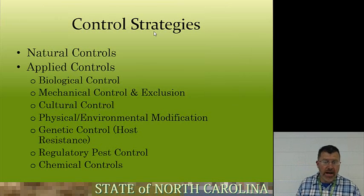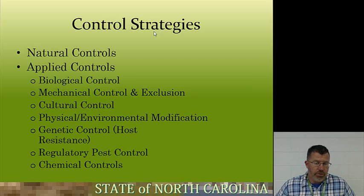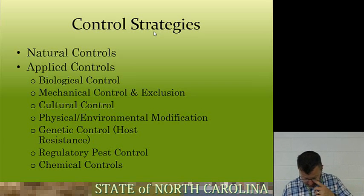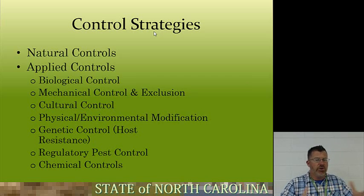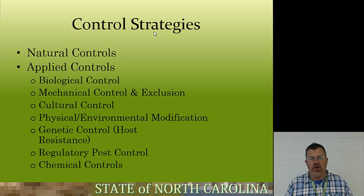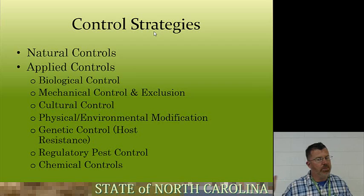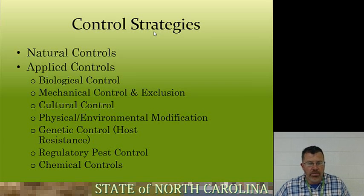Control strategies. Natural controls — we've watched the lecture on natural pest controls, so you're familiar with that. Applied controls are methods used by humans. We can introduce biological control using natural enemies and predators — we're introducing them, not letting nature take its course. That would be your natural pest control, but here we're introducing predators into a greenhouse setting. Mechanical control and exclusion: caulking around doors and window seals, screens on windows to keep pests out of your house. Traps are also considered mechanical — those lights that bugs fly into and get electrocuted.